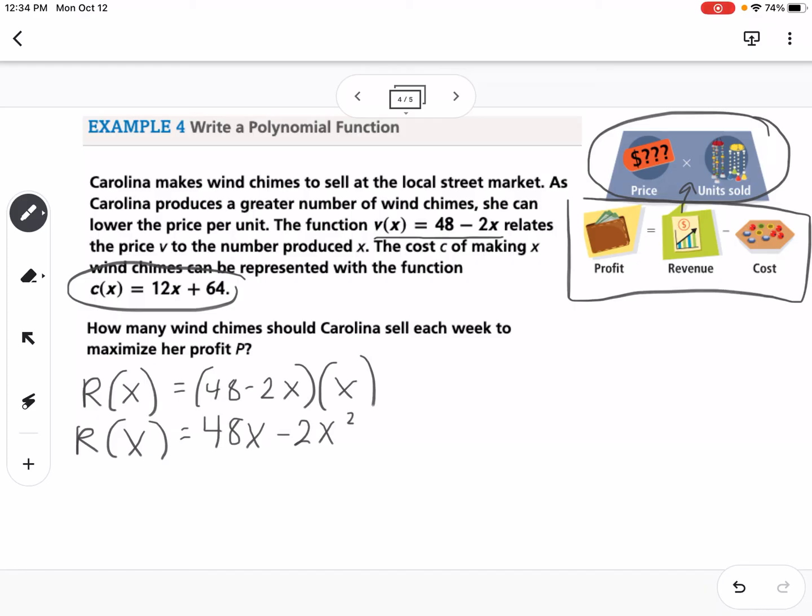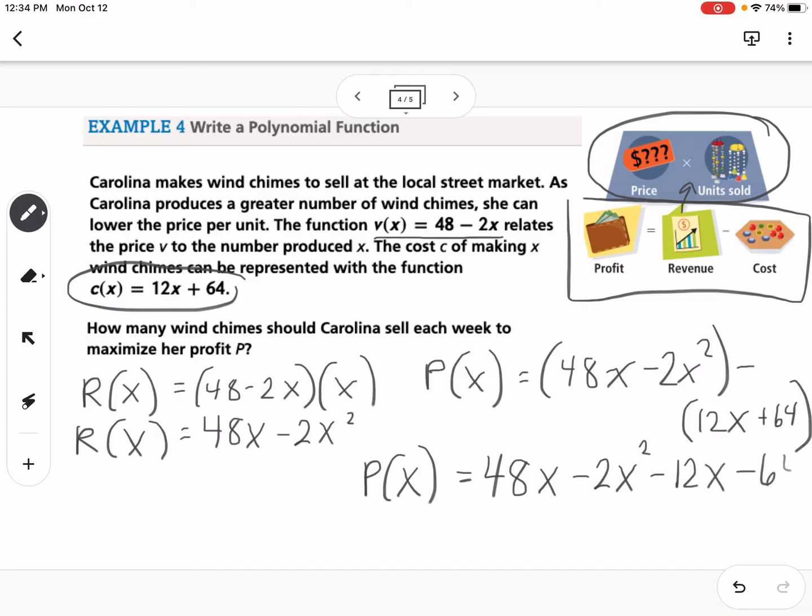So then we want to find profit. So profit P of X is equal to our revenue, which is 48X minus 2X squared minus our cost, running out of space here, which is 12X plus 64. So if I simplify that by distributing the negative through the parenthesis, I have 48X minus 2X squared minus 12X minus 64, and then finally I'm going to put that in standard form. So negative 2X squared, combine the 48X and the negative 12X, so it would be plus 36X minus 64.